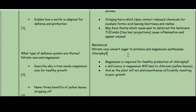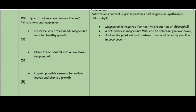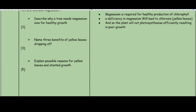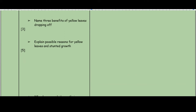What are the two purposes of nitrate ions and magnesium ions? Nitrate ions convert sugar to protein, and magnesium ions synthesize chlorophyll. Nitrate ions are important for protein and therefore growth; magnesium is important for chlorophyll and therefore for photosynthesis and growth. Describe why a tree needs magnesium ions for healthy growth: magnesium is required for healthy production of chlorophyll. A deficiency in magnesium leads to chlorosis — the leaves turn yellow because there is no chlorophyll to make them green — so the plant cannot photosynthesize effectively, resulting in poor growth.